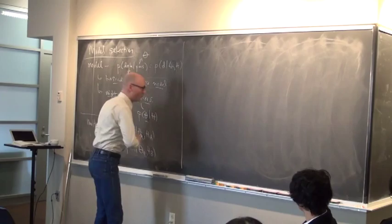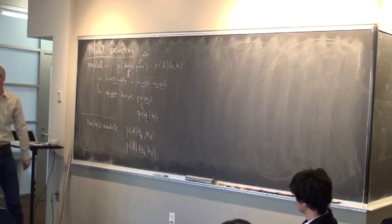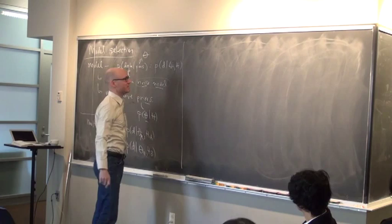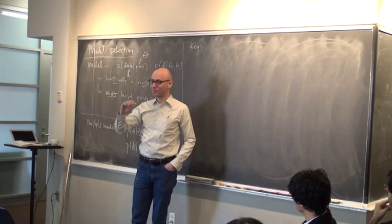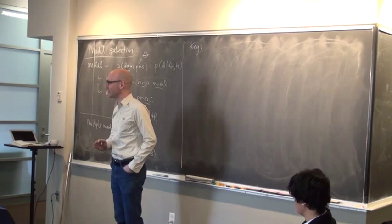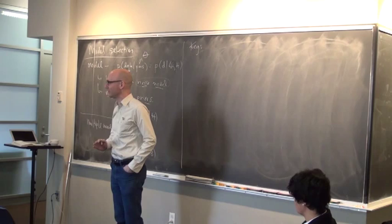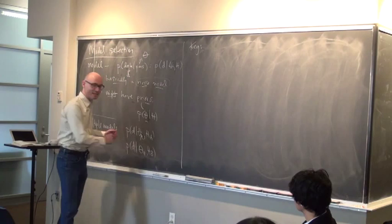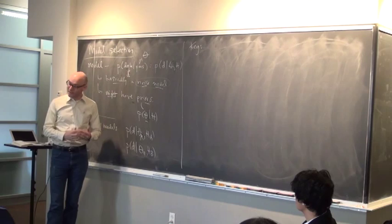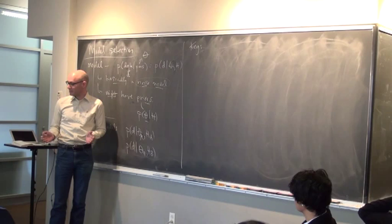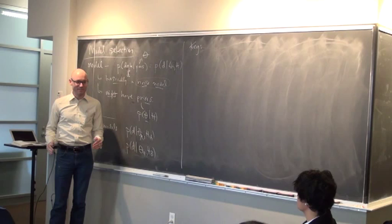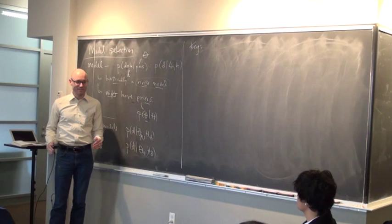Here's the key point: inference — statistics — whether you're Bayesian or Frequentist, everything only tells you about probabilities. All you can do with inference is assign probabilities — either probabilities to the data given the model, or probabilities to the model given the data if you're Bayesian. Inference cannot tell you how to decide. It doesn't tell you what to do. It only tells you what numbers to put on the models.